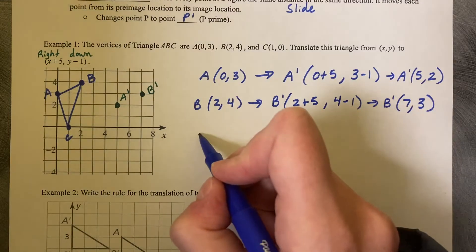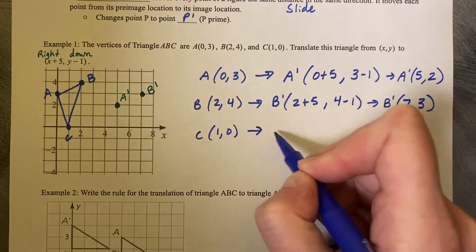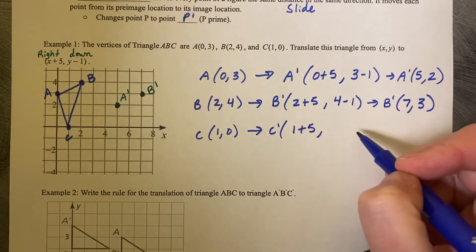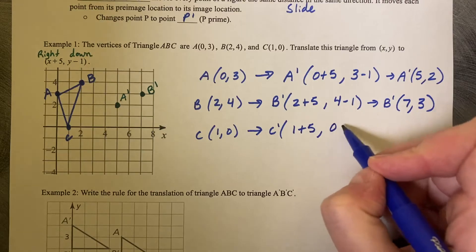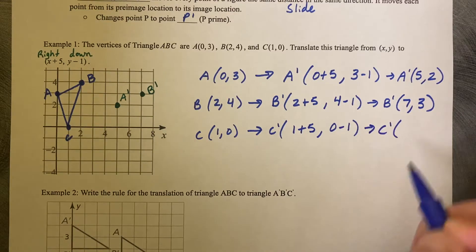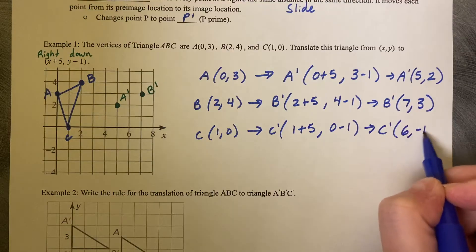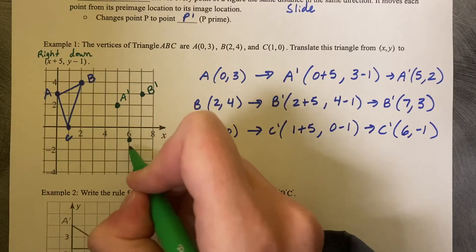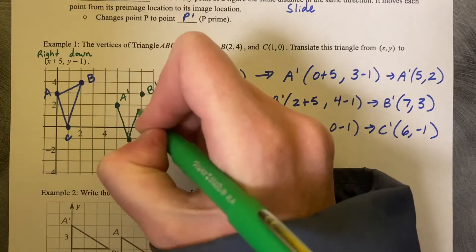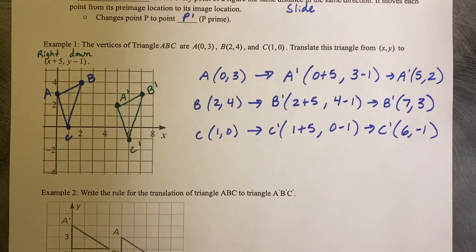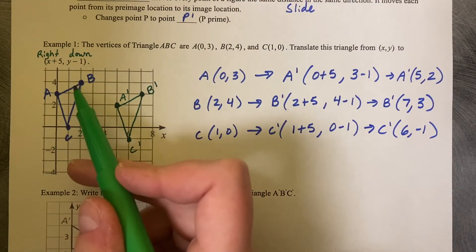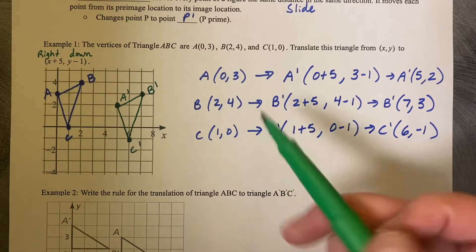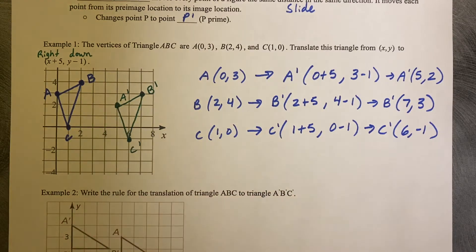And finally, our C value is at (1,0) to start. C prime is going to be at 1 plus 5 and 0 minus 1. So that's going to be at (6, -1). So now my blue triangle is my pre-image, and then my green triangle is my image, and I've translated right 5, down 1.